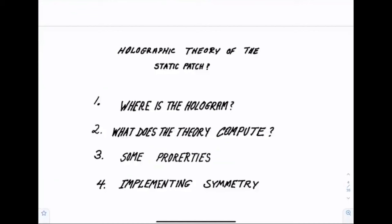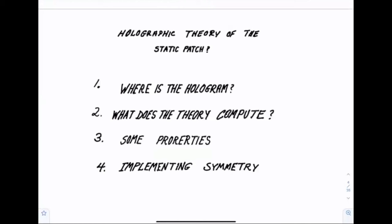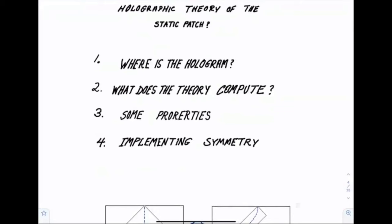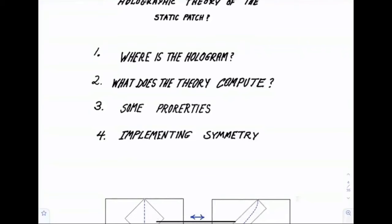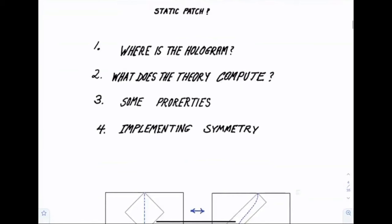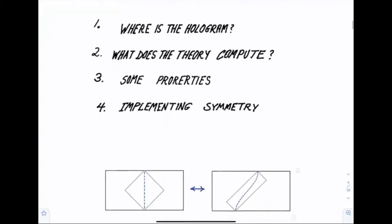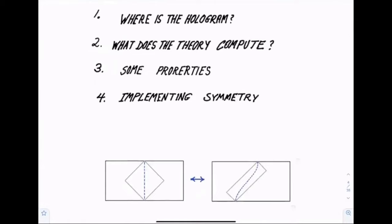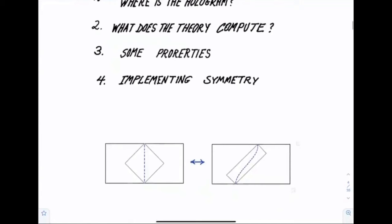What is our best bet for a truly holographic theory of de Sitter space? And the only alternative that I know is to have a holographic theory associated with each static patch. First question is where is the hologram? Now when I say where is the hologram, I mean the same sense as we say the hologram for ADS is on the boundary. Next, what does the theory compute? What do we know about the properties of a holographic description of a static patch? And finally, I want to talk about implementing the symmetries.